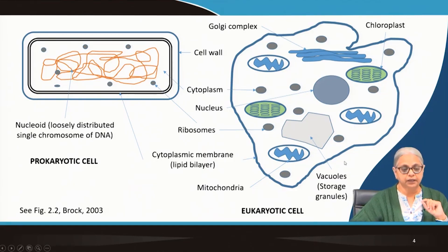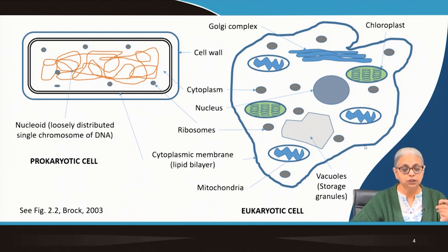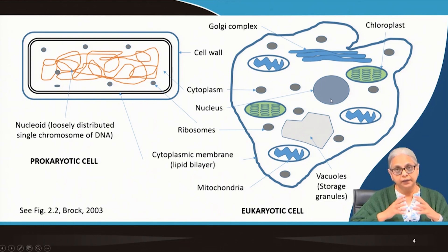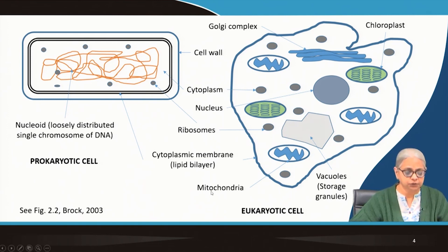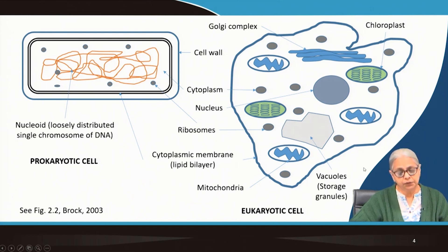Looking at the eukaryotic cell, it may or may not have a cell wall. For example, plant cells have a cell wall; animal cells may or may not. They are all defined by a well-defined nucleus where the DNA of the eukaryotes is placed — compactly folded and enclosed by the nuclear membrane. The cytoplasm contains several other organelles: mitochondria, chloroplasts if it is a photosynthetic organism, Golgi complex. Ribosomes and the cytoplasmic membrane are present in both prokaryotes and eukaryotes.